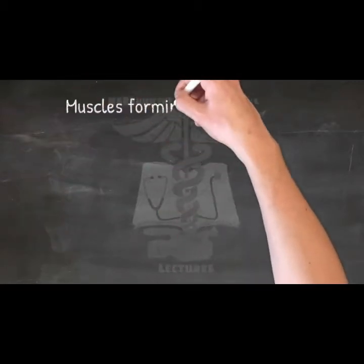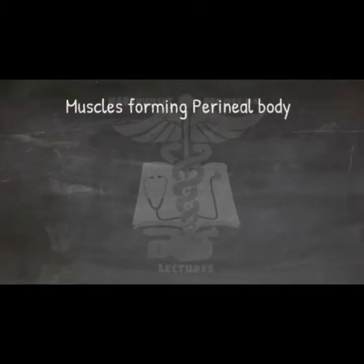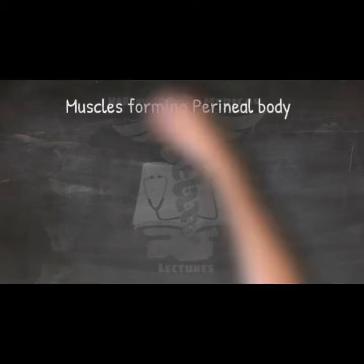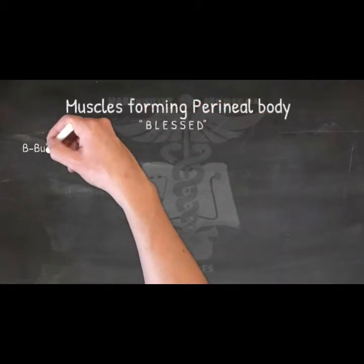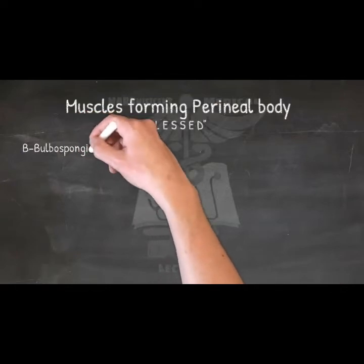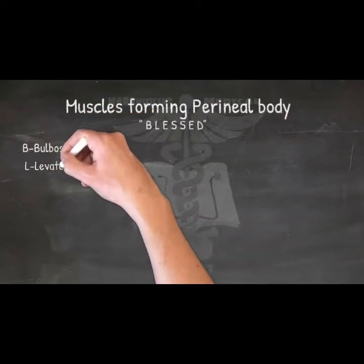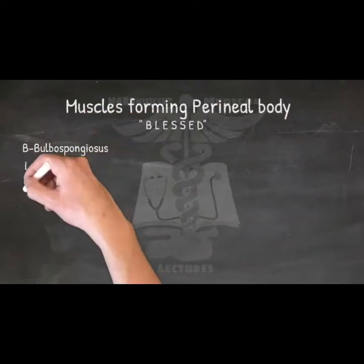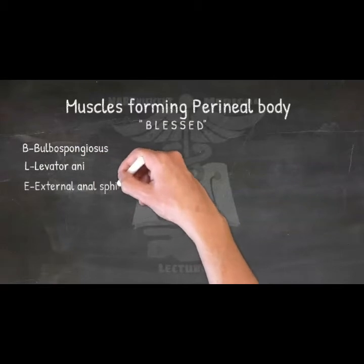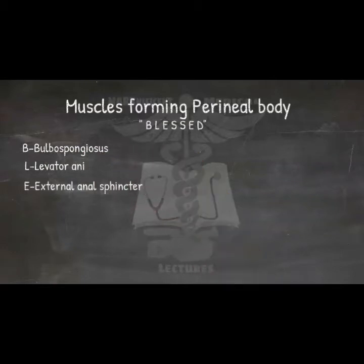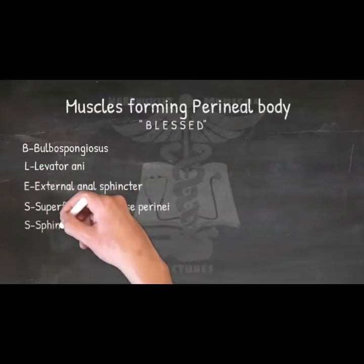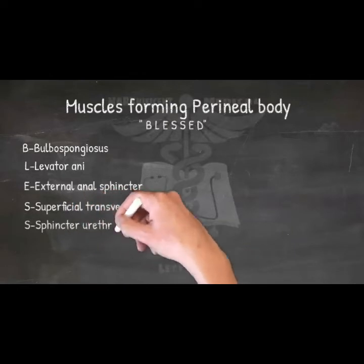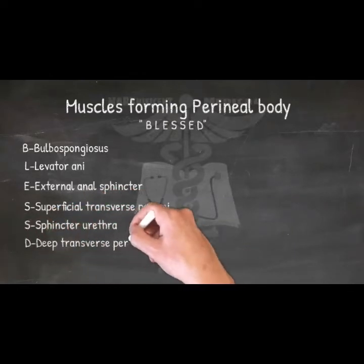Muscles forming the perineal body — mnemonic: 'Blessed.' B: Bulbospongiosus, L: Levator ani, E: External anal sphincter, S: Superficial transverse perinei, S: Sphincter urethrae, D: Deep transverse perinei.